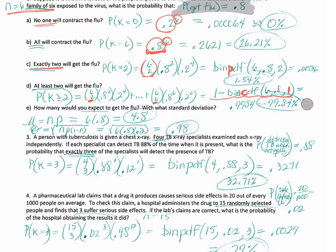E asks how many would you expect to get the flu, and with what standard deviation. How many of the six members in the family? Why is this considered binomial? Because it's a set number of people — six in the family — so we've got an N. That's why it's 6 times 0.8, and with this standard deviation.